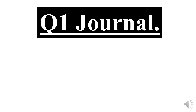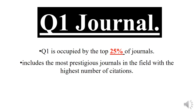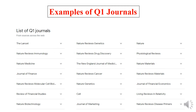Q1 is occupied by the top 25% of journals. It includes the most prestigious journals in the field, with the highest number of citations. You can find examples of Q1 journals in different disciplines, and you can find the journal quartile by its impact factor.